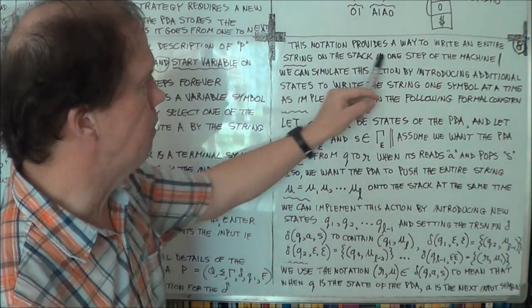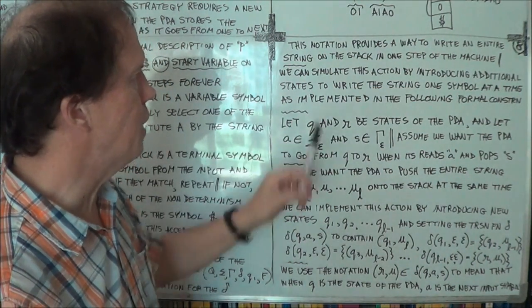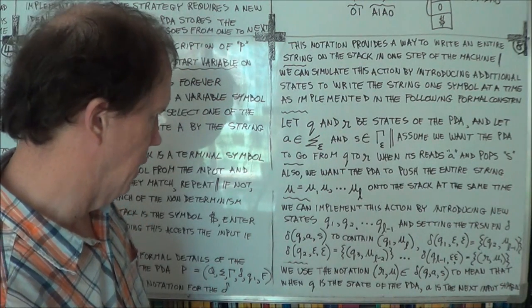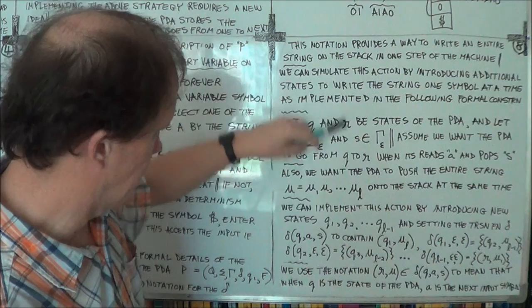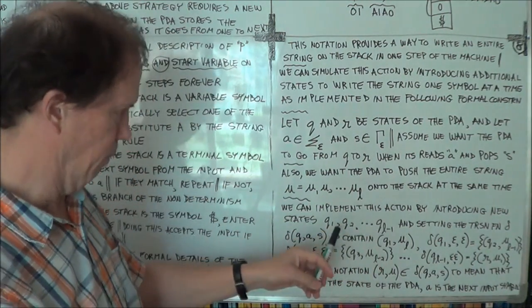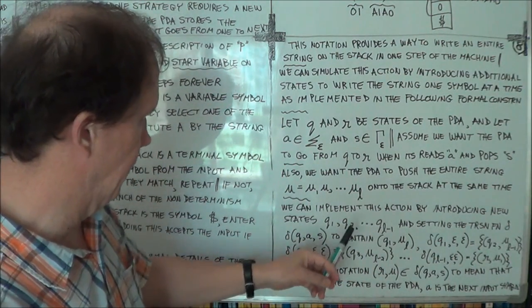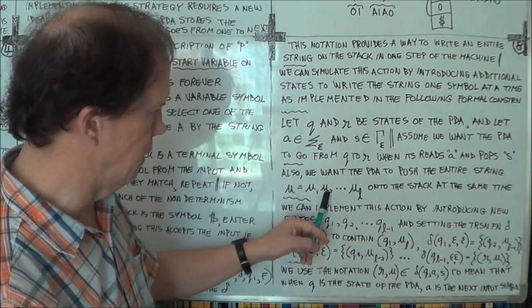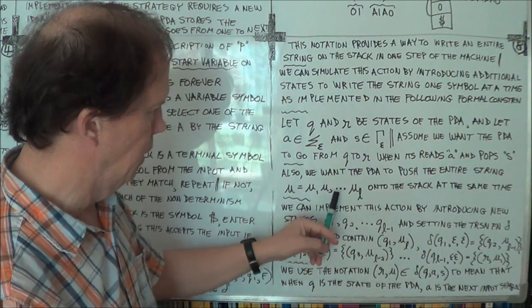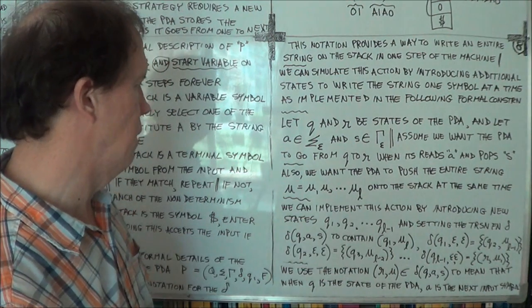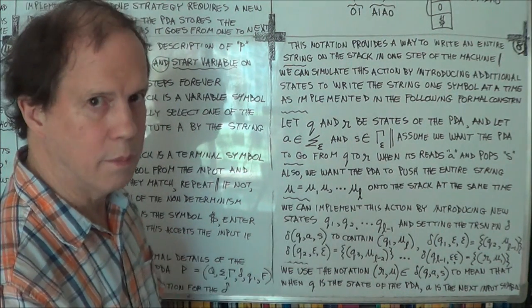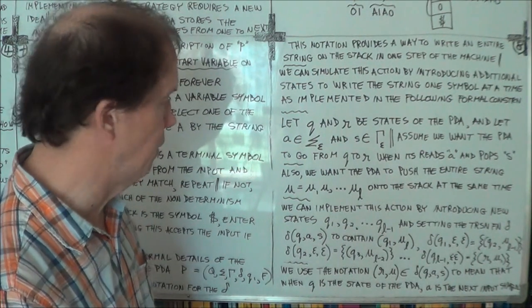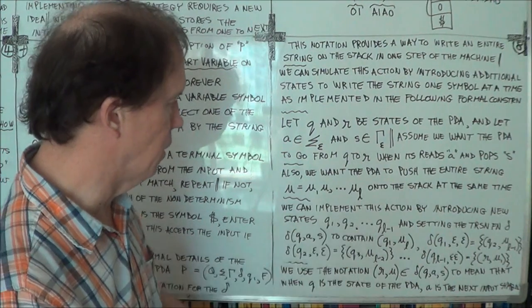And now we can simulate that by adding extra states. Now imagine the string of symbols you want to put on the stack is this. And these symbols could be a mix of terminals and variables.